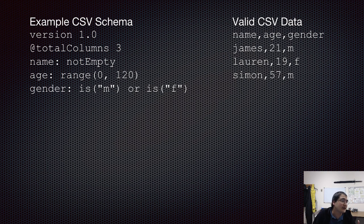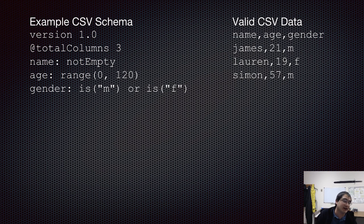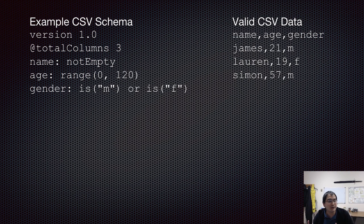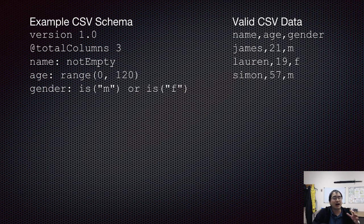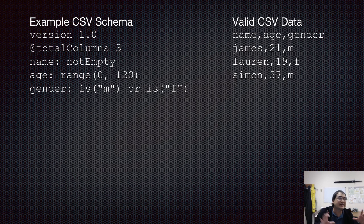On the left is an example schema. It has a version number, and it says there should always be three columns. The first column should be 'name' and it should not be empty. It says 'age' should be in the range between 0 and 120, and 'gender' should be either M or F. You don't need to learn the details of how CSV schemas work — this is really more to understand the idea of a schema as a way of putting additional constraints on what is allowed.